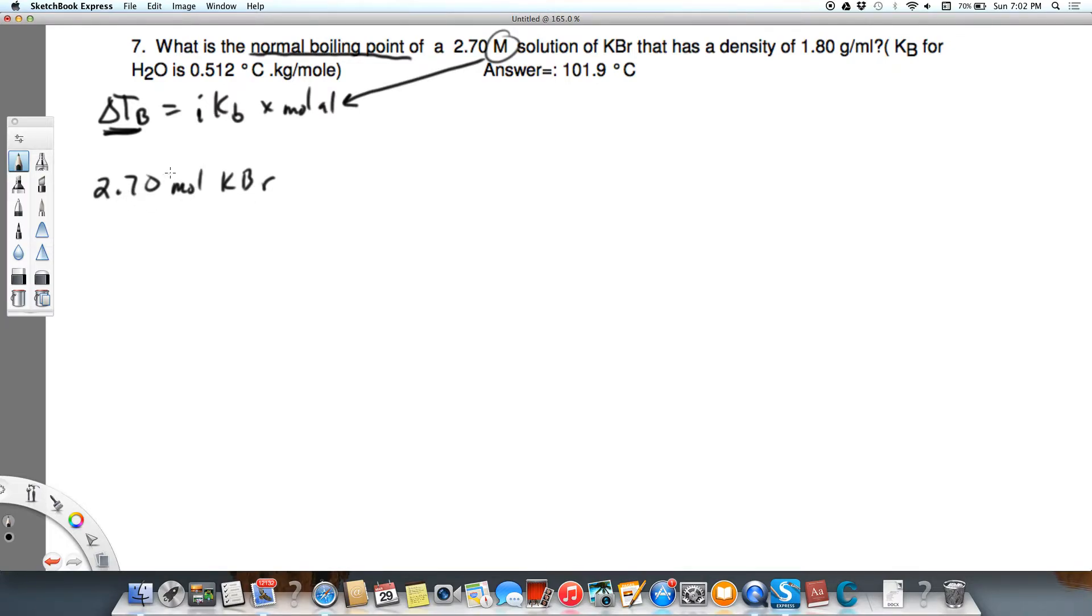But we need to know how many moles of KBr in a kilogram of water. So what I need to do first is change this to grams. So I have 119 grams KBr per one mole potassium bromide. And so this gives me 321 grams of potassium bromide in 1,000 milliliters of total solution. Not water, but the whole solution. That's the problem.